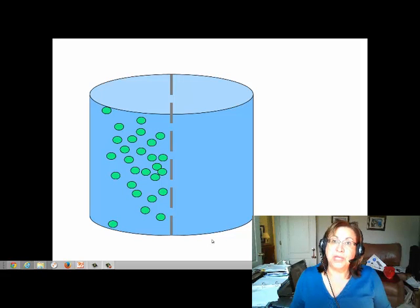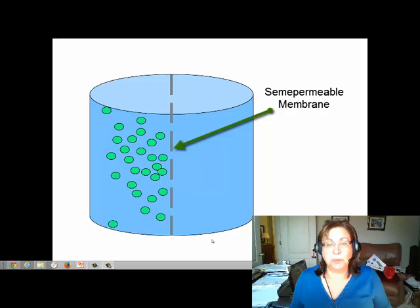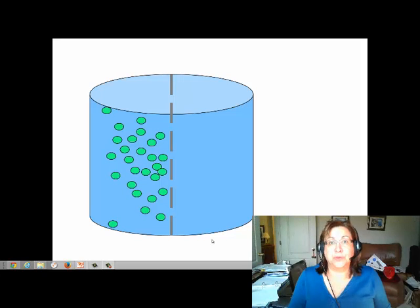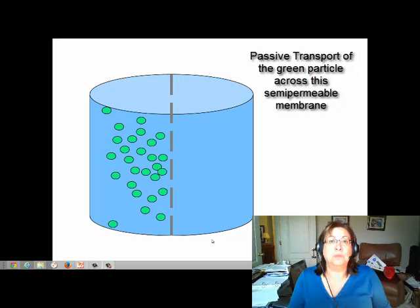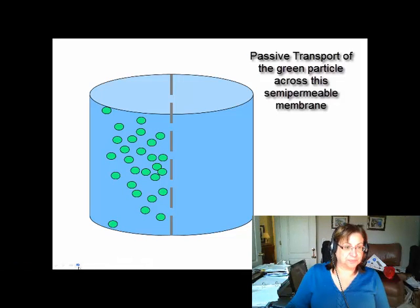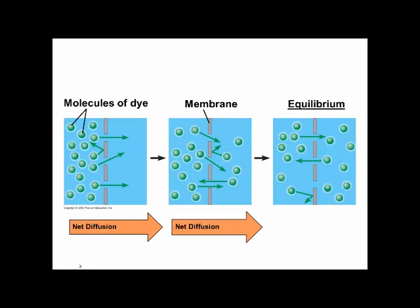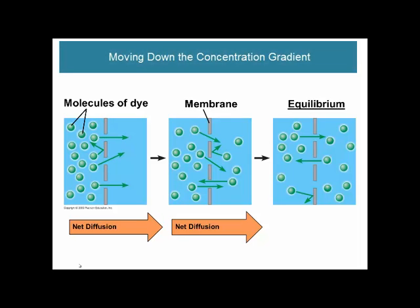Let's imagine we have a beaker of solution and we've placed a semi-permeable membrane down the center. This membrane is like a dialysis membrane — it has pores in it. Then we're going to put some green particles on one side of that membrane, and those particles are small enough to pass through the pores of our semi-permeable membrane. If this is so, then we should see those green particles move across the membrane down a concentration gradient as in passive transport. Closing in on one part of the membrane, we can see the molecules move across the membrane down the concentration gradient.